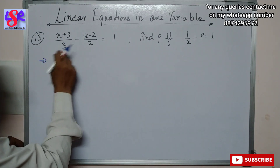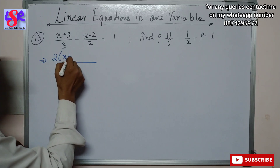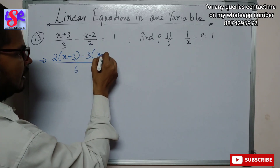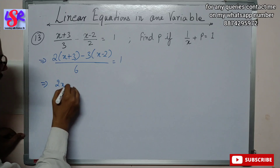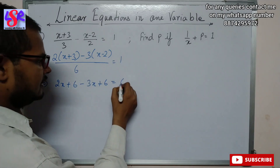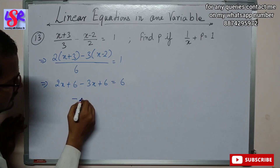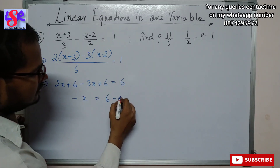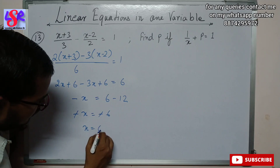Taking LCM of 2 and 3, we get 6. So [2(x + 3) - 3(x - 2)] / 6 = 1. Expanding: 2x + 6 - 3x + 6 = 6. Combining like terms: -x + 12 = 6, so -x = -6, giving x = 6.